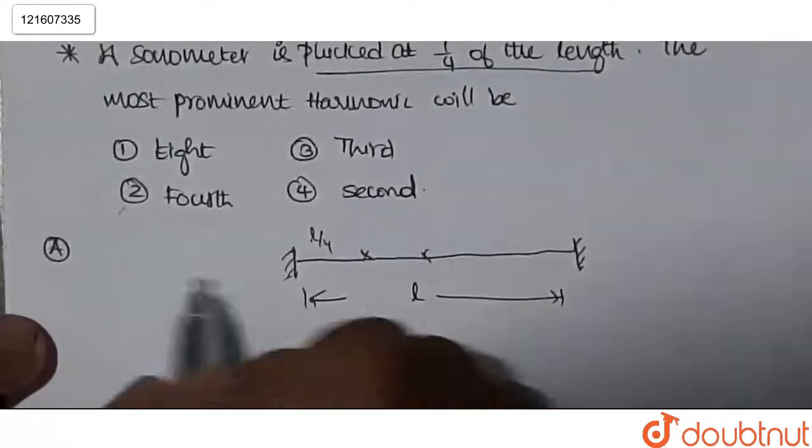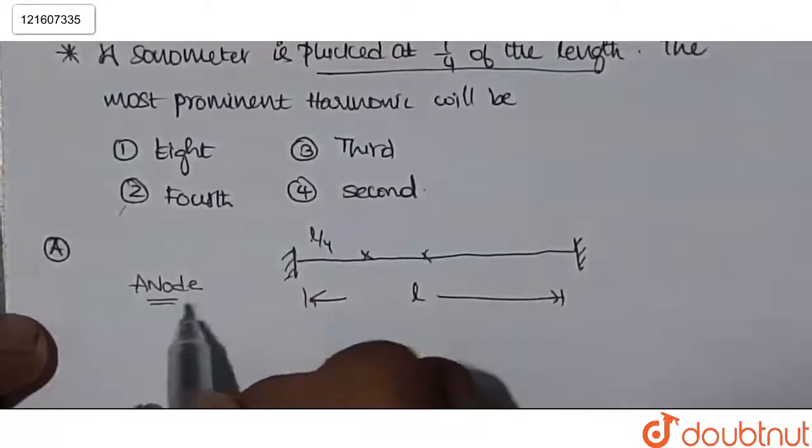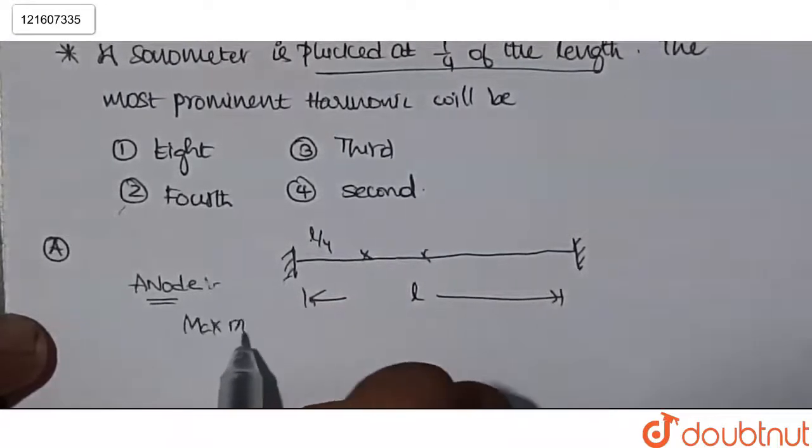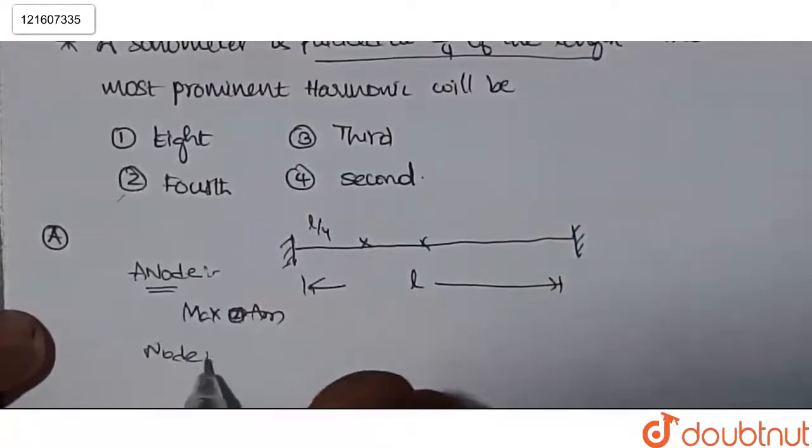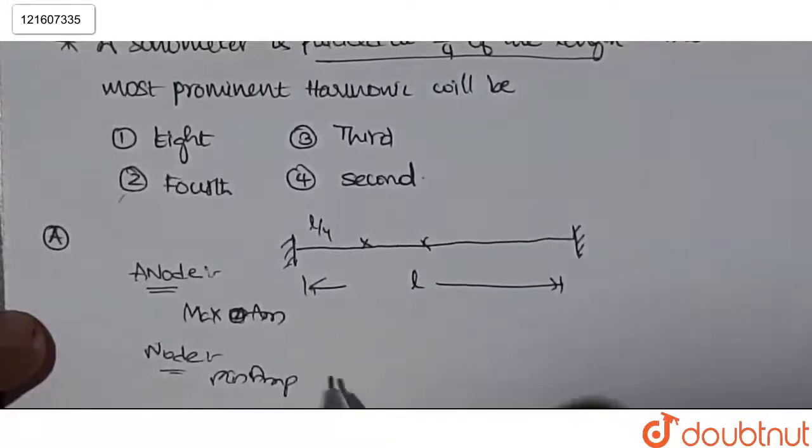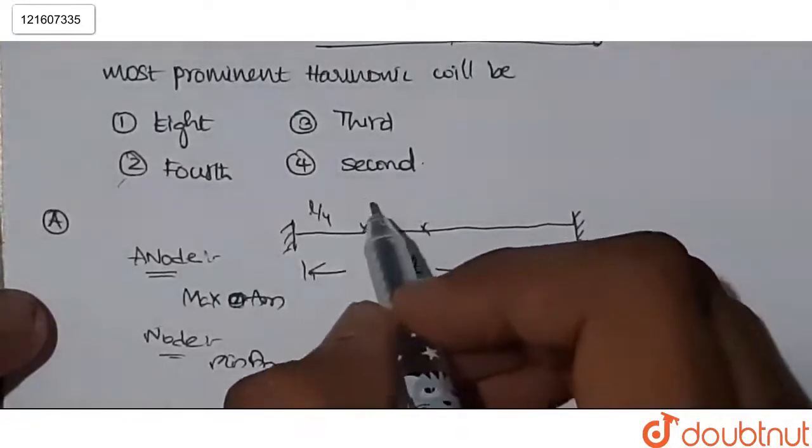Then what will happen here? Antinode will be formed. Antinode means maximum amplitude. Node means minimum amplitude. So here we have maximum amplitude.